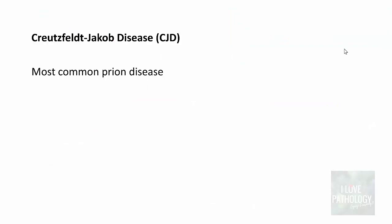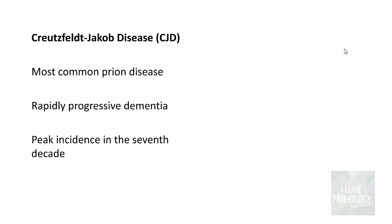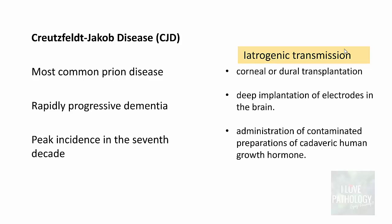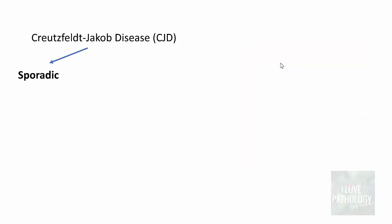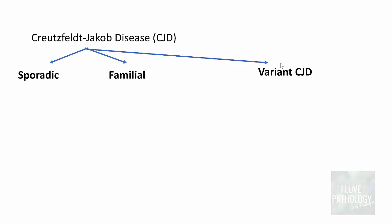Creutzfeldt-Jakob disease is the most common prion disease, clinically characterized by rapidly progressive dementia, with peak incidence in the seventh decade of life. It can be transmitted iatrogenically — for example, during corneal or dural transplantation, by deep implantation of electrodes in the brain, or by administration of contaminated preparations of cadaveric human growth hormone. CJD can be sporadic, familial, or a variant form.